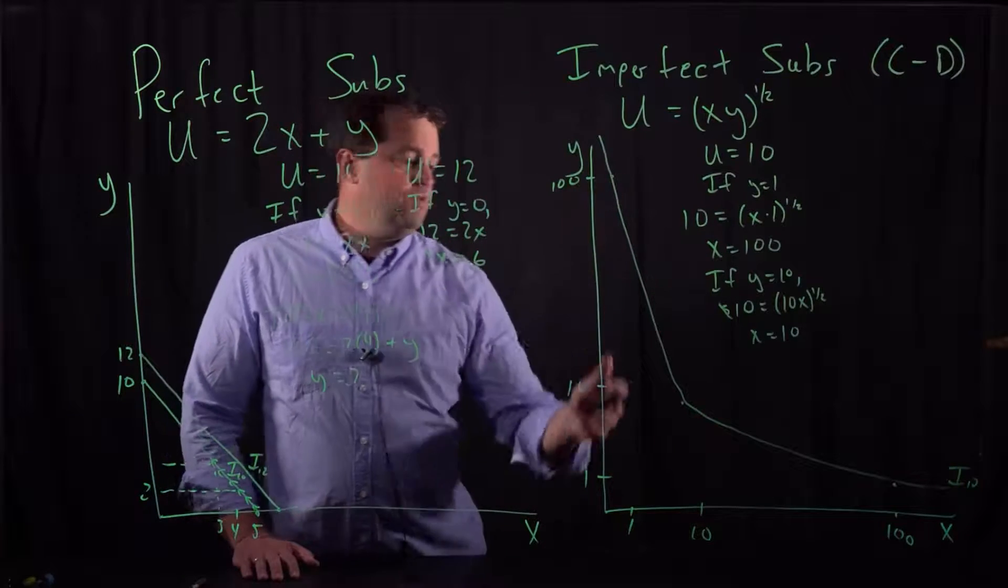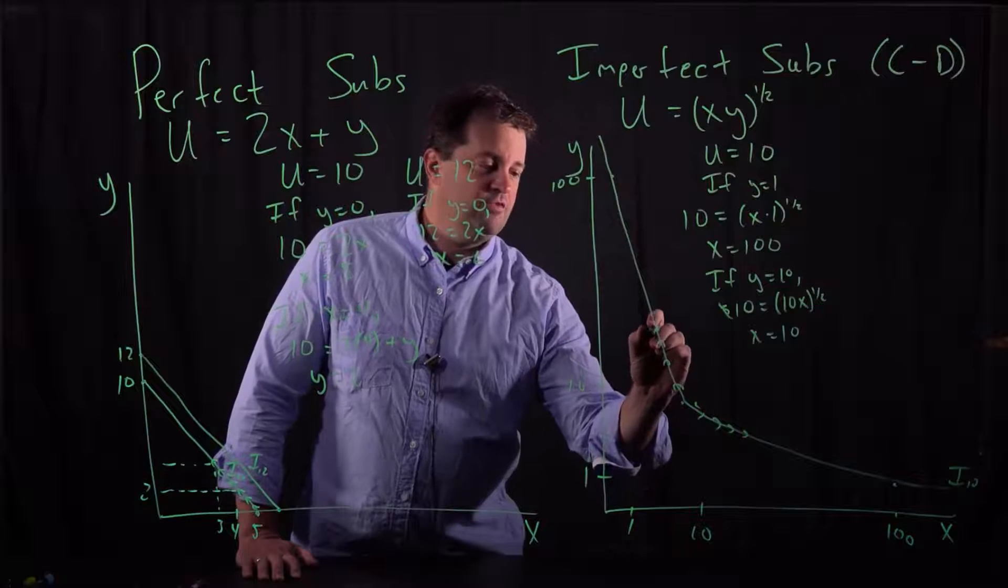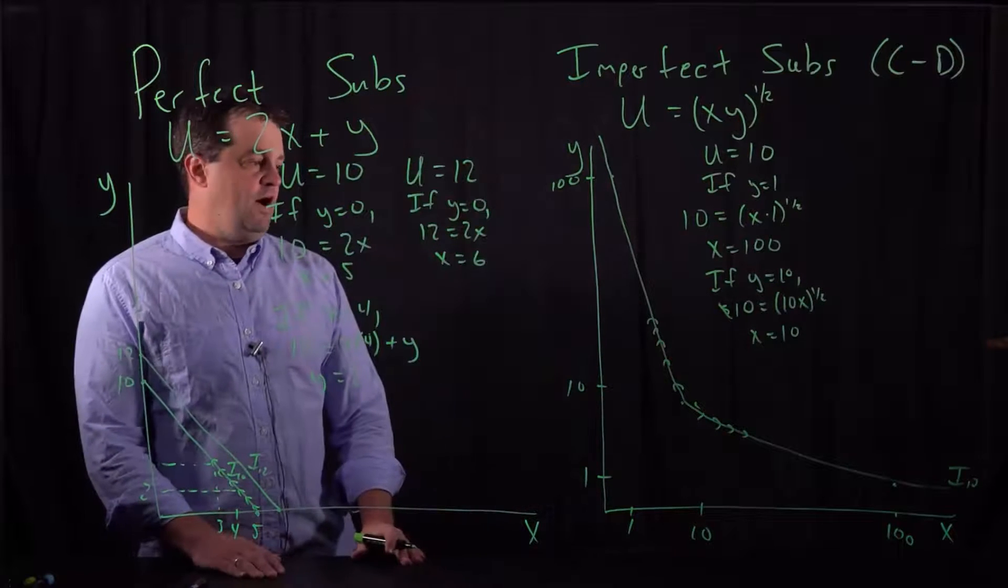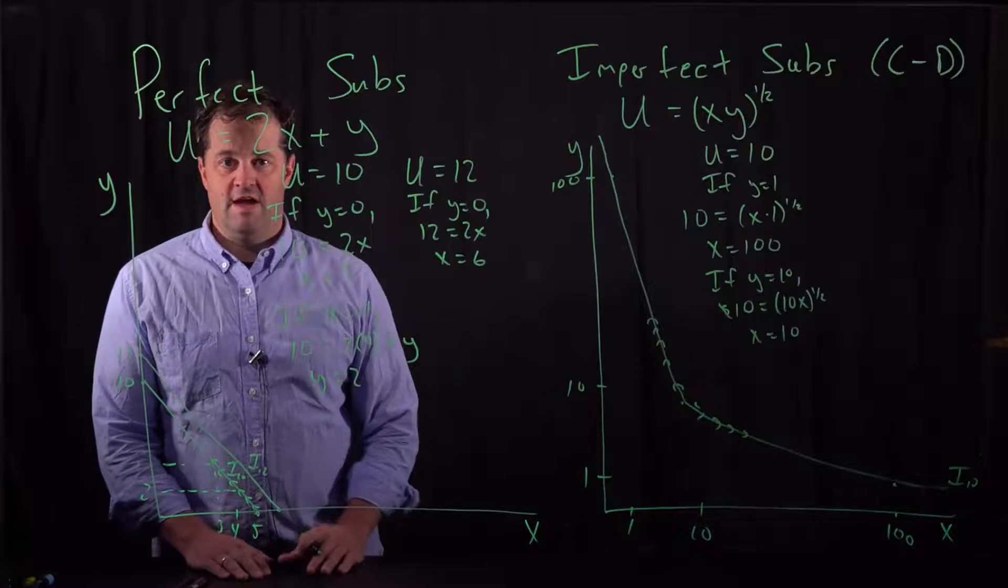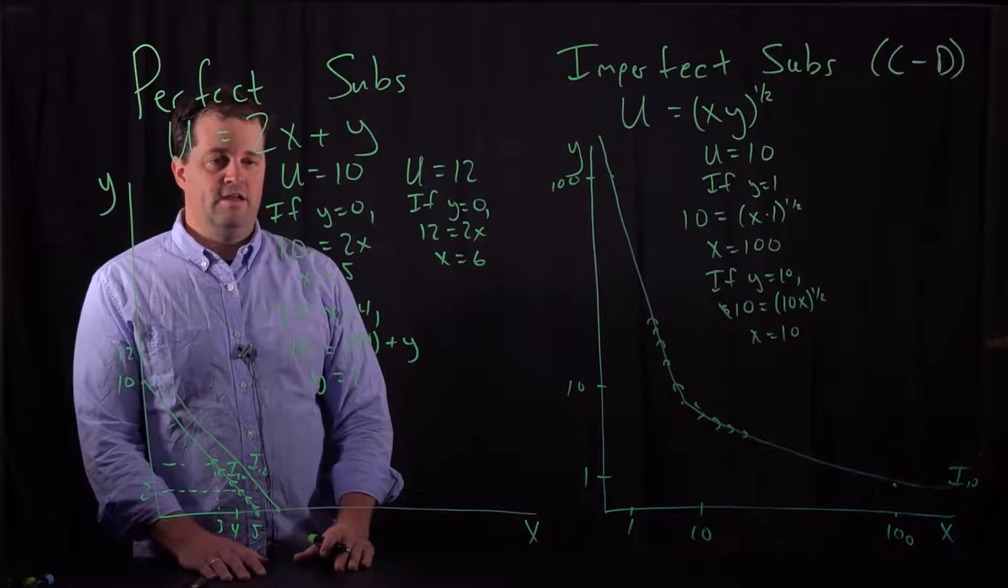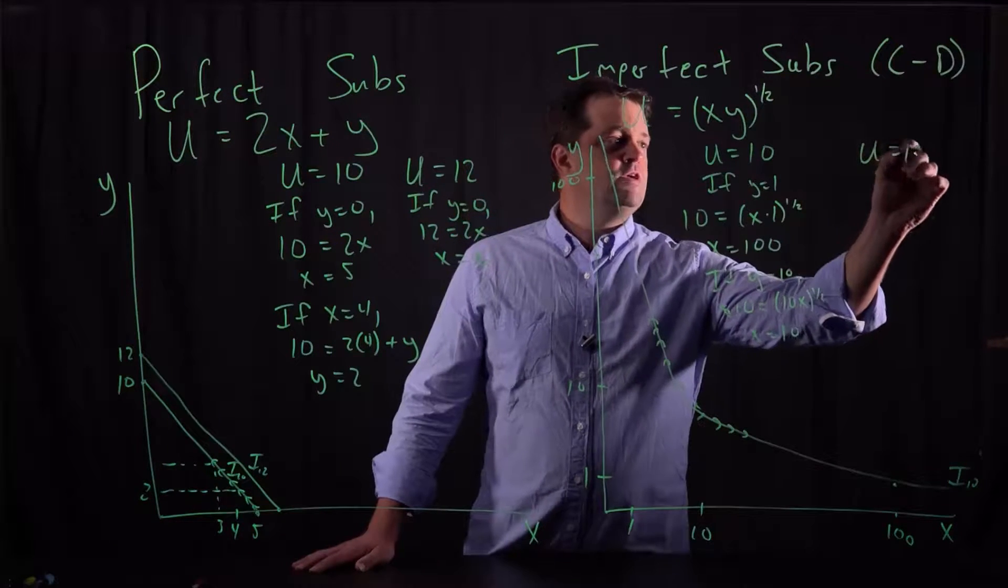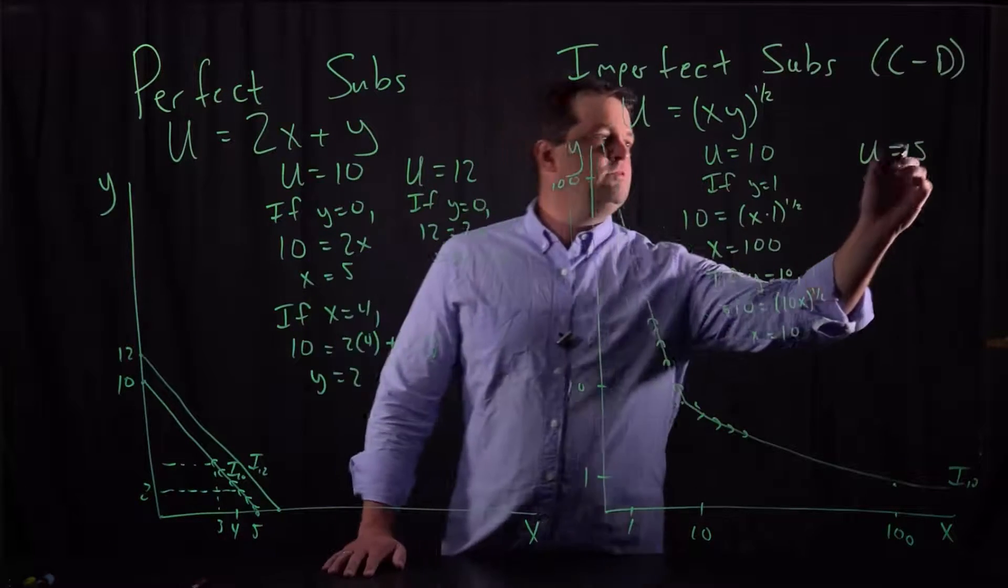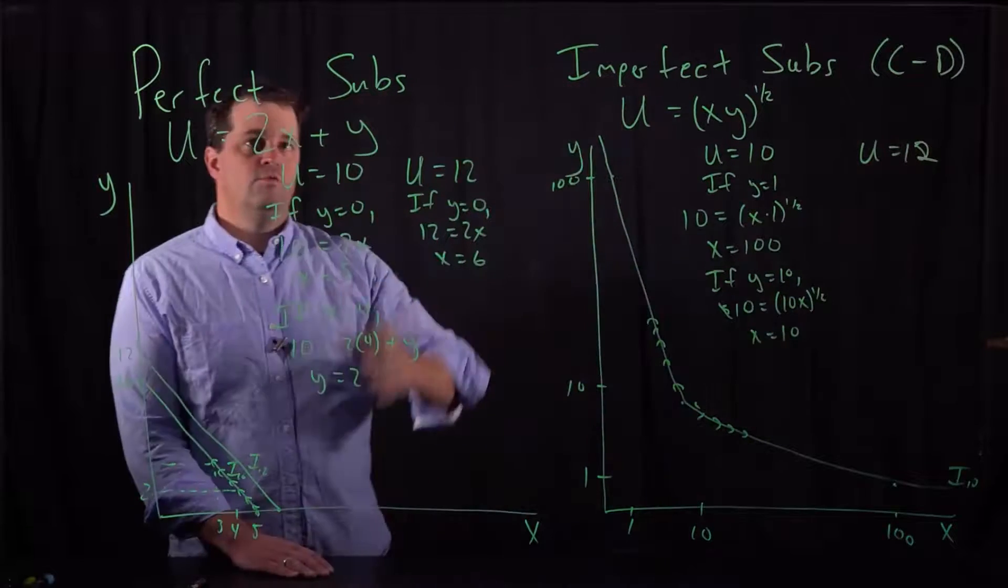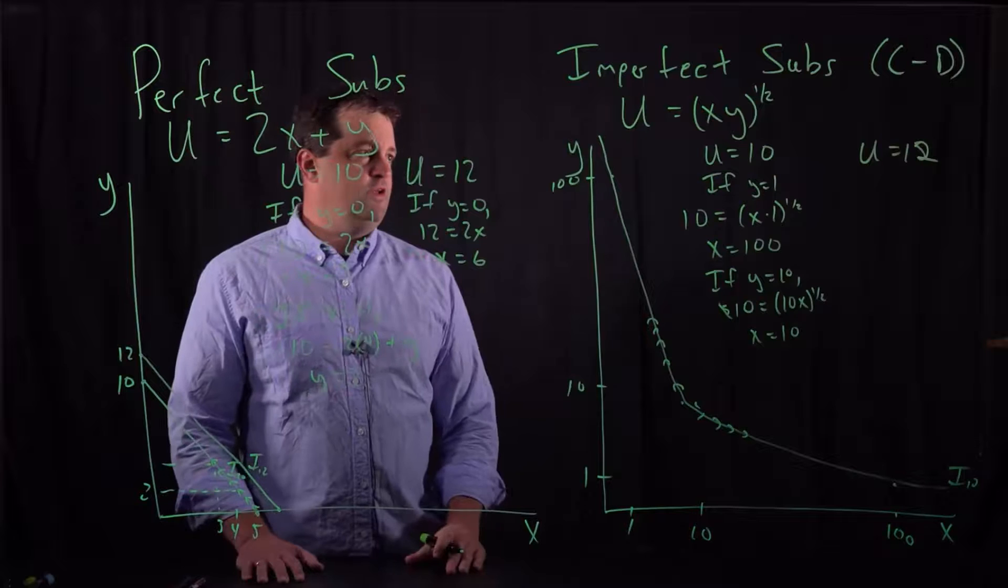It's a curve through there that shows all the different possibilities of reaching utility equal to 10. And because we found three points on there, we can imagine moving along that indifference plane, compensating for losses of X or Y in order to maintain the utility equal to whatever value is consistent with that indifference plane. Now the last thing I want to do here is think about reaching utility equal to 12, like we did with the perfect substitute model. So what I'm going to do is shift to a different indifference plane.